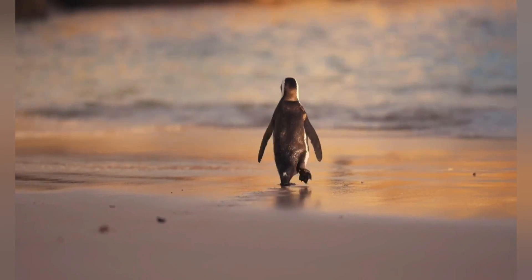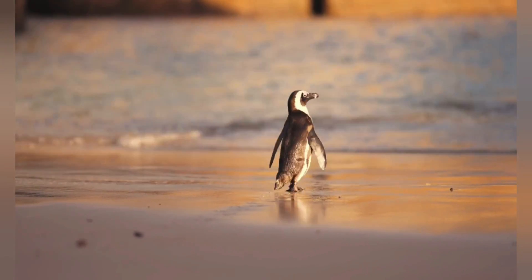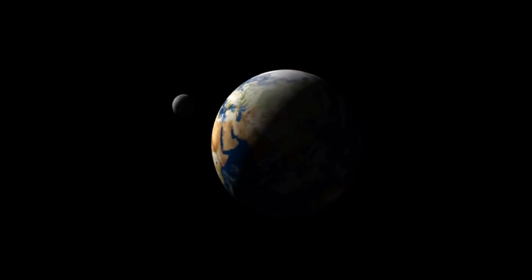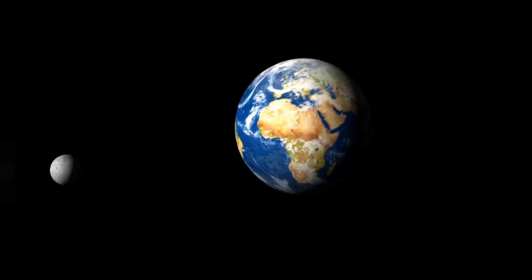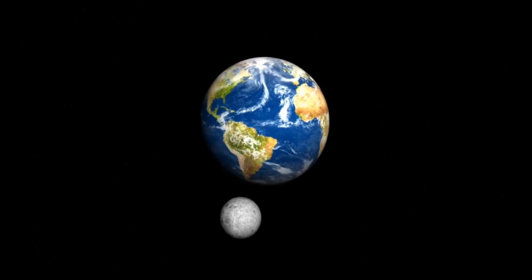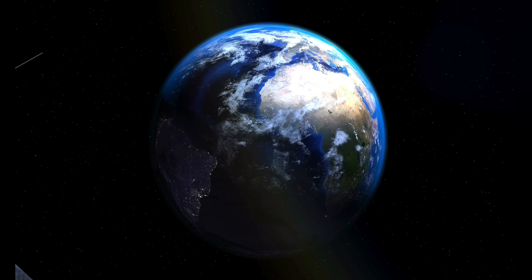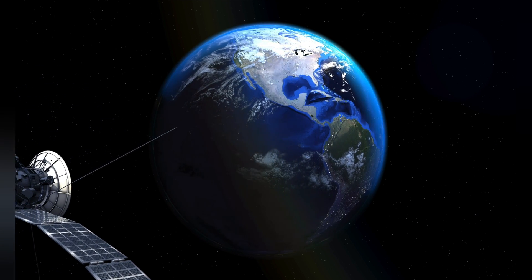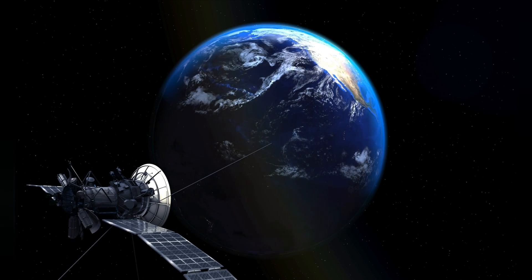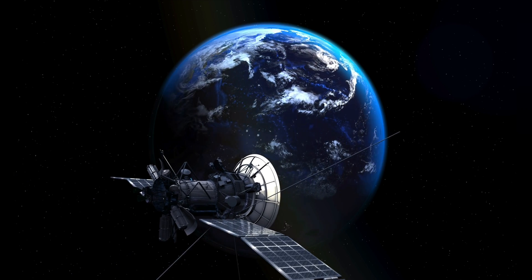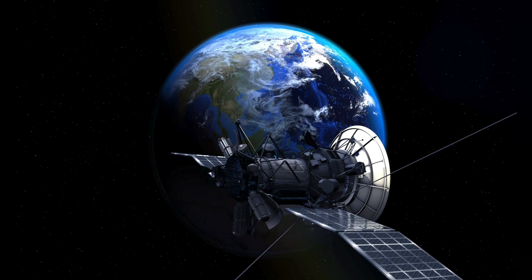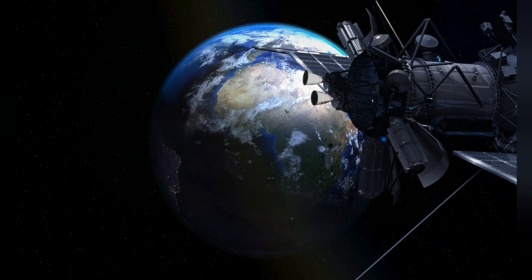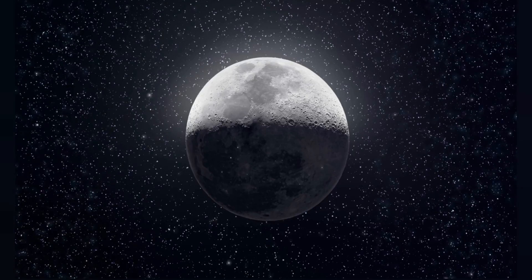In summary, our moon is a very unique object in the solar system, with its large size, unique origin, different composition, close orbit, and strong influence on Earth's tides setting it apart from other moons that have been observed. These differences have played a significant role in shaping the history of our planet and have helped to make Earth the unique and diverse world that it is today.